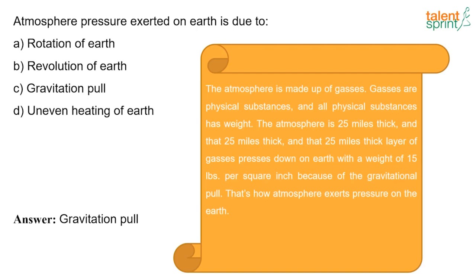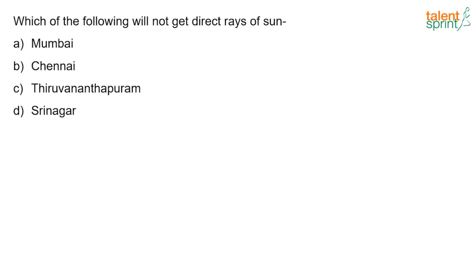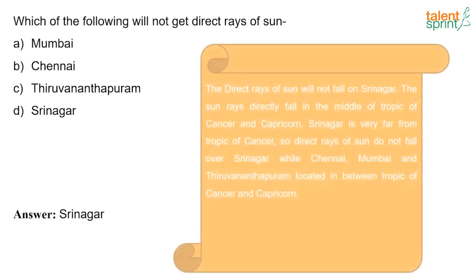Which of the following places will not get direct rays of the sun: Mumbai, Chennai, Thiruvananthapuram, or Srinagar? The answer is Srinagar. Direct rays of the sun will not fall on Srinagar because the sun's rays directly fall between the Tropic of Cancer and Capricorn, and Srinagar is very far from the Tropic of Cancer, while Chennai, Mumbai, and Thiruvananthapuram are located between the two tropics.